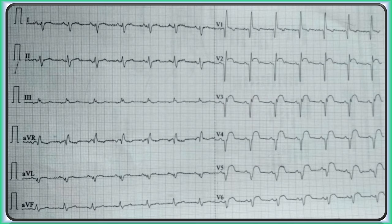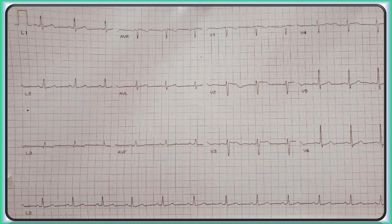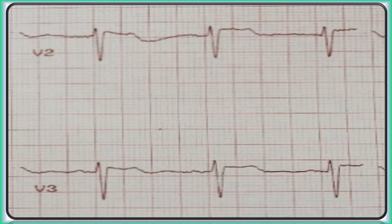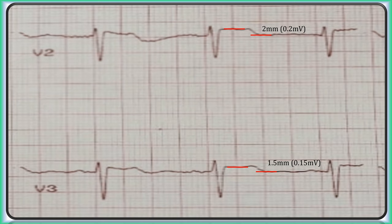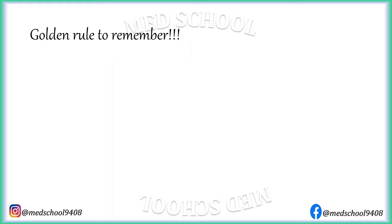There are ST elevations in leads V2 to V6, so prominent they are significant even at a glance — no need to apply any criteria. Now look at another ECG that appears normal at first glance. On close inspection of V2 and V3: V2 has ST elevation of 2 mm (0.2 mV) and V3 has elevation of 1.5 mm (0.15 mV). Applying the criteria: if the patient is female, the changes are significant; if male, they are non-significant. These criteria act as a guide, not absolute rules — clinical features are the most important aspect.